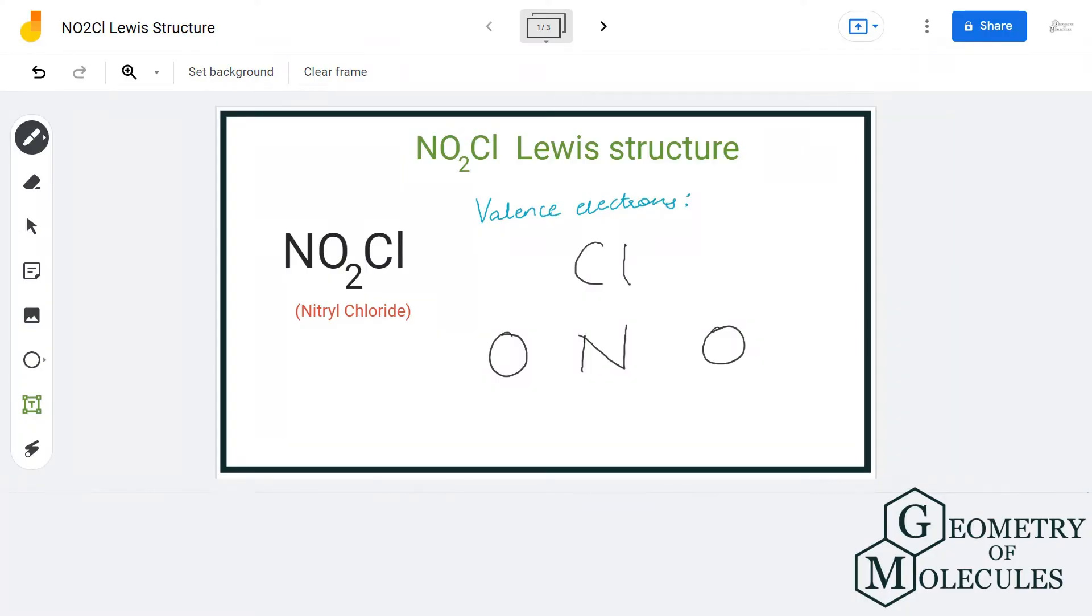Hi guys, welcome back to our channel. In today's video we are going to help you with NO2Cl Lewis structure. It's the chemical formula for nitryl chloride, and to determine its Lewis structure we will first find out the total number of valence electrons for this molecule.